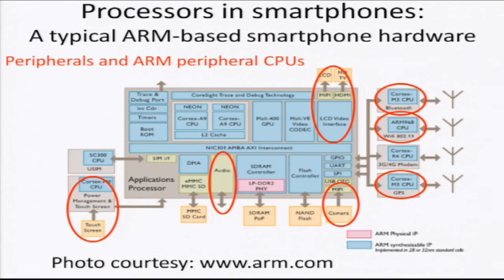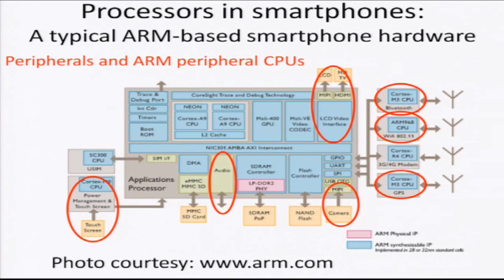Finally, there are several peripherals and ARM peripheral CPUs in this example. It has a touch screen connected to a Cortex CPU which manages the power and other activities of the touch screen. It has an audio interface, an LCD and HDTV interface connected to the HDMI and LCD video interface, and a camera. For communication, it has a Cortex M3 CPU for Bluetooth handling, an ARM 968 CPU for wireless connections, and a Cortex M3 CPU for GPS connections. This is a pretty typical ARM-based smartphone hardware found today, and with this we close the lecture.